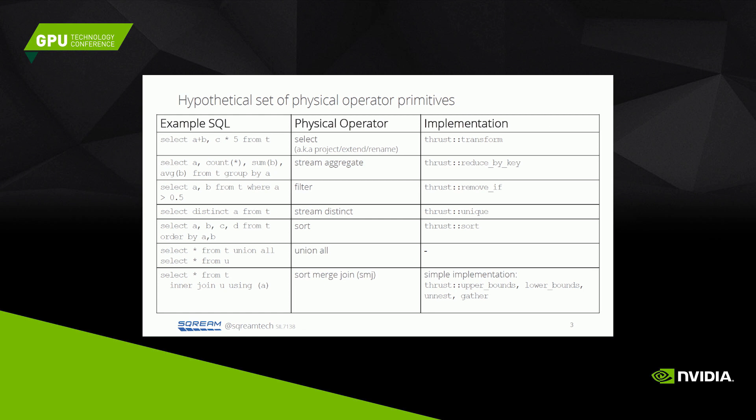Here's a table of some simple SQL queries. In the middle column, you can see the so-called physical operator used to implement each of these SQL queries. On the right-hand side, you can see the Thrust function which would implement this physical operator. This is a good illustration of the correspondence of a lot of SQL queries to very straightforward GPU code, and how easy it is to set up some prototype code using the Thrust library.